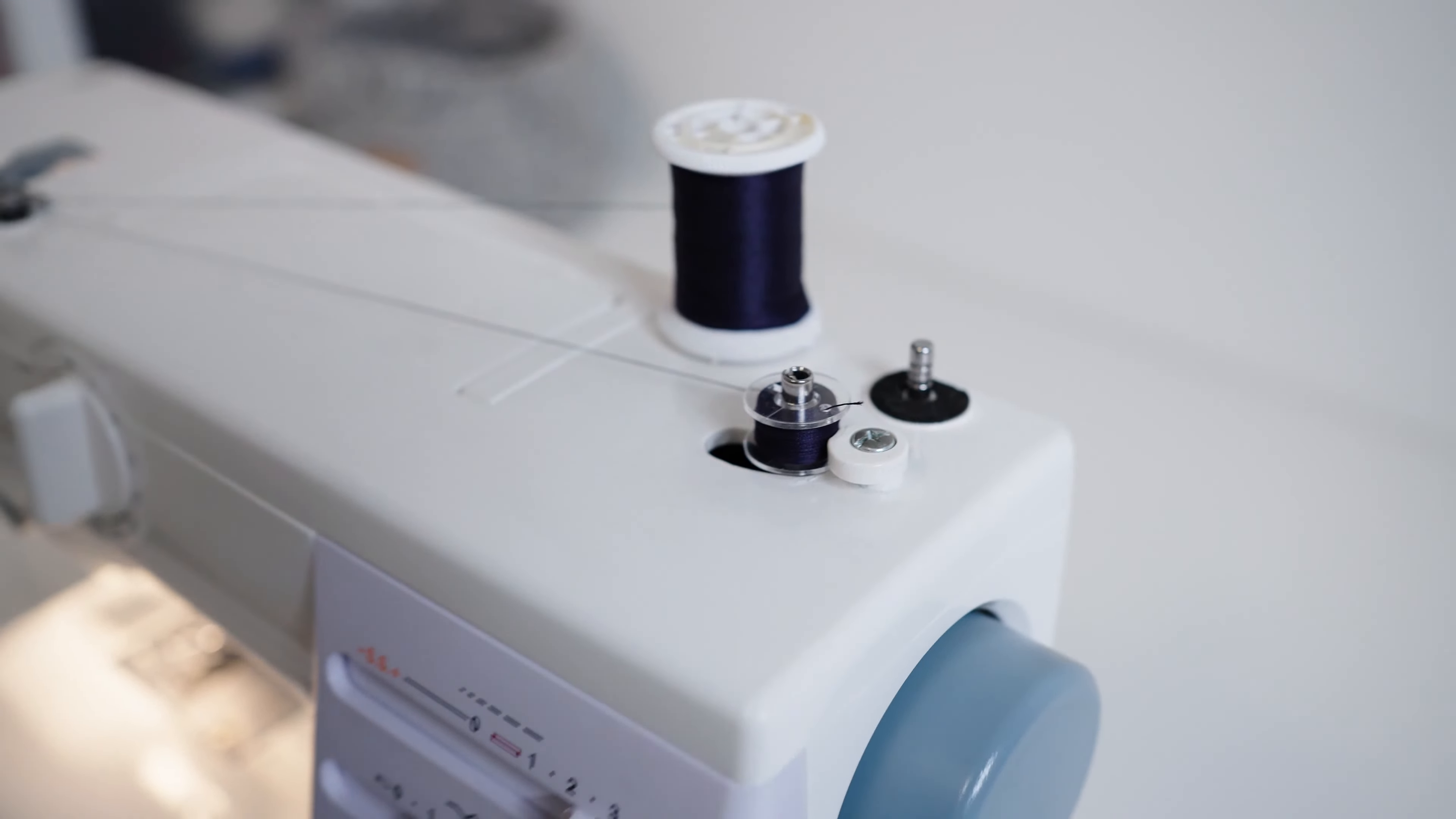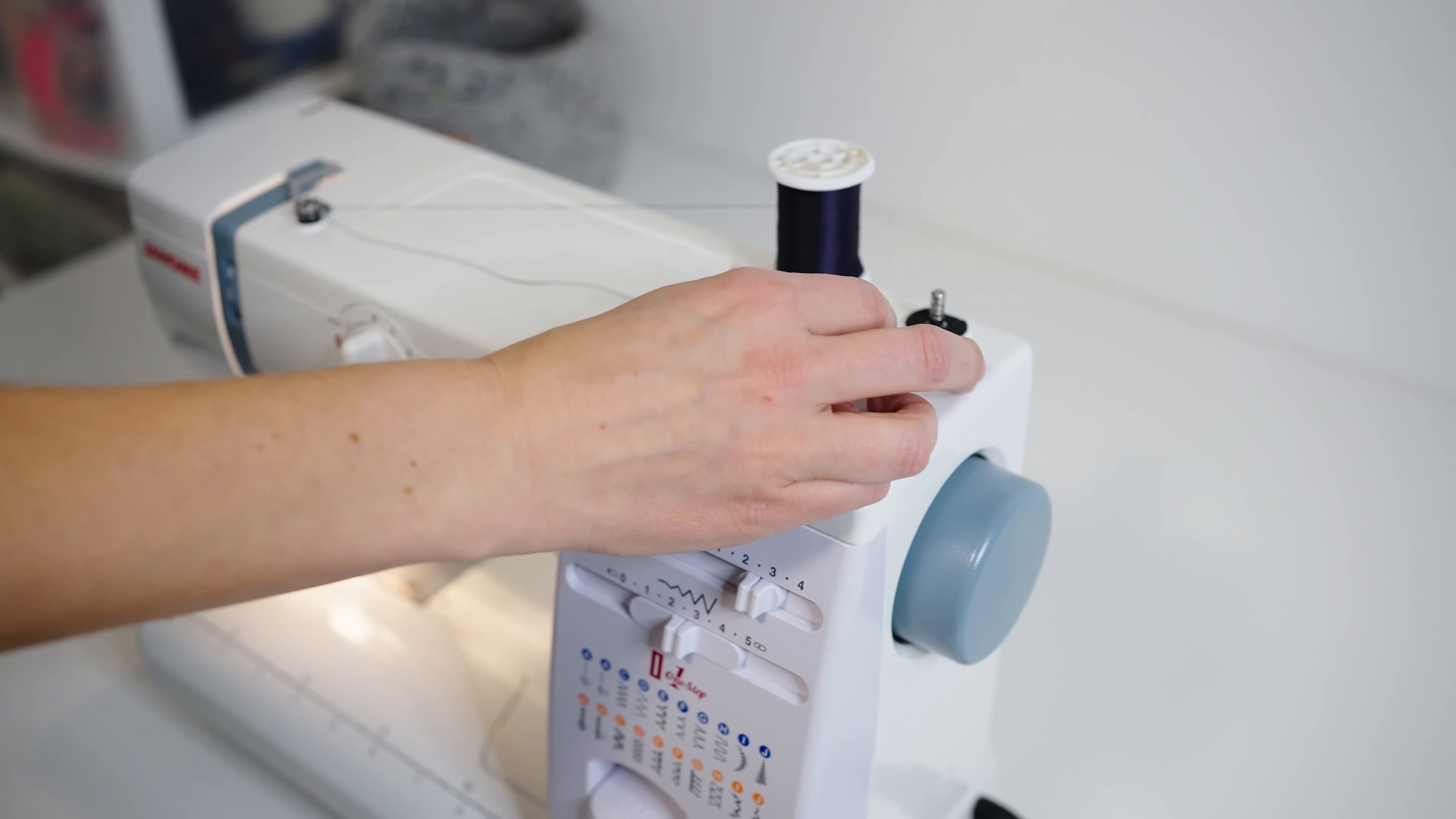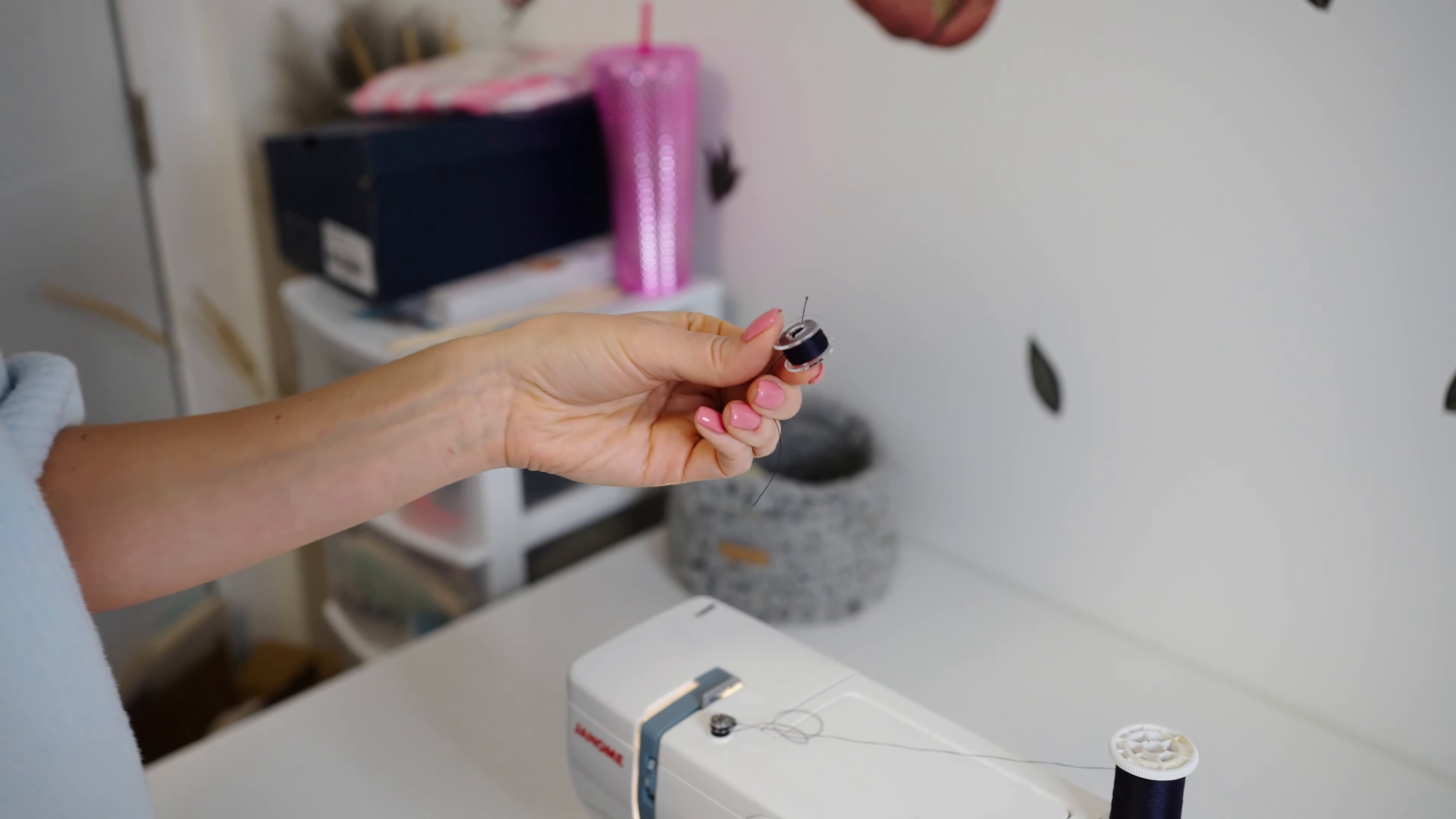When your thread hits the white part, you can stop. Make sure you slide the bobbin winder pin back over, otherwise your needle won't go up and down anymore. You'll just cut it and then you're good to go. Super easy.